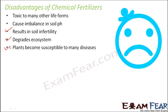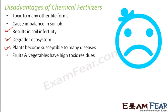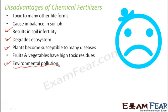Plants become susceptible to many diseases due to use of these chemical fertilizers, as they are exposed to several chemicals unnecessarily. This exposure means the plants do not remain healthy from inside, and many diseases easily attack them. Fruits and vegetables have high toxic residues, and when consumed by another organism, that toxicity enters their body as well. Excessive use of any chemicals causes environmental pollution — it is put into the soil causing soil pollution, and with excessive irrigation the soil washes away, polluting the water too.